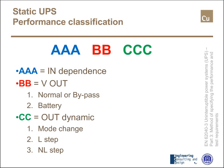With reference to current language, a system is something between a single product and an installation. In the past, system simply meant installation. Now, practically, these two meanings are different. A static UPS is classified with a series of eight letters, as shown in the slide.